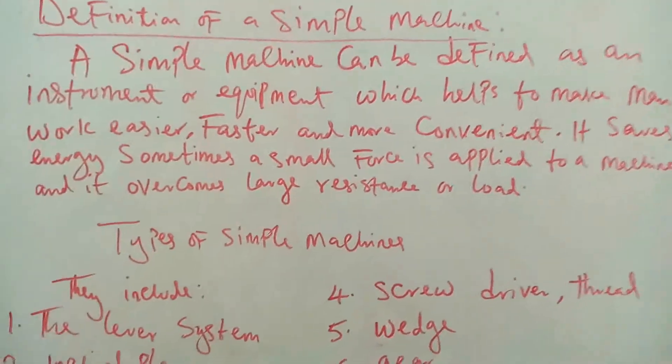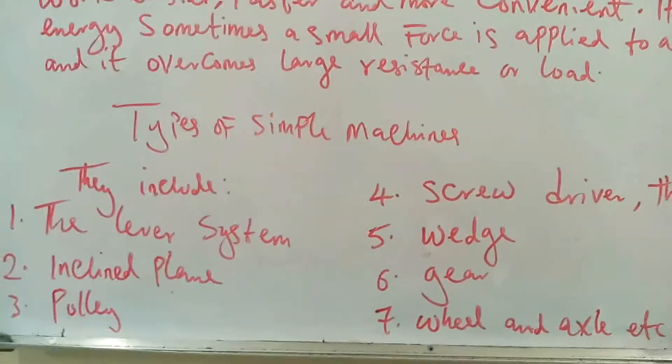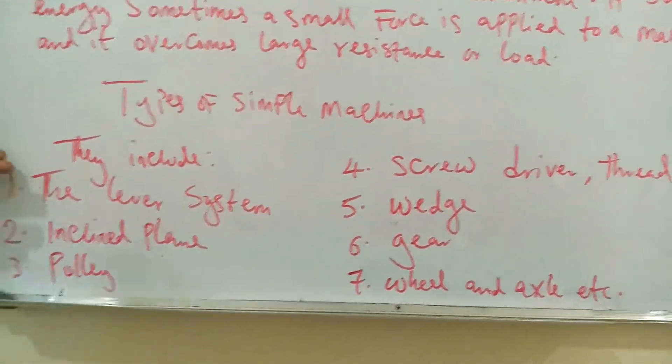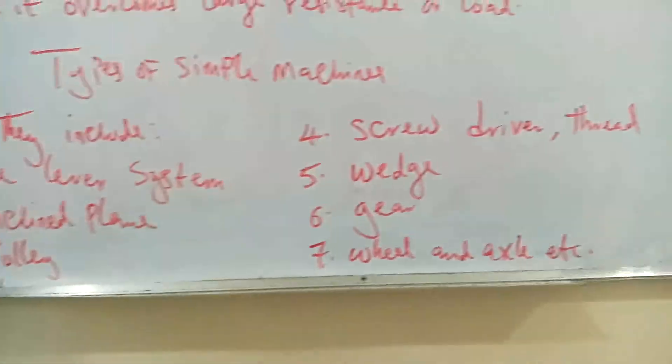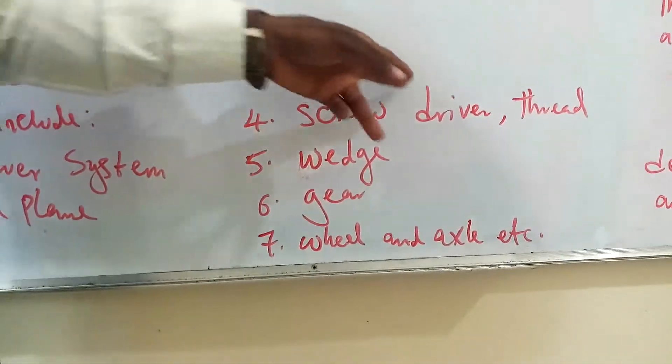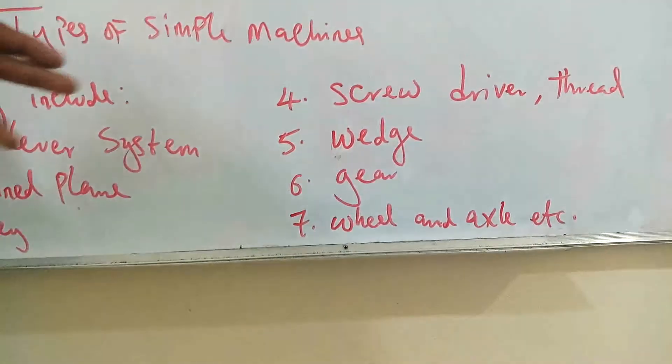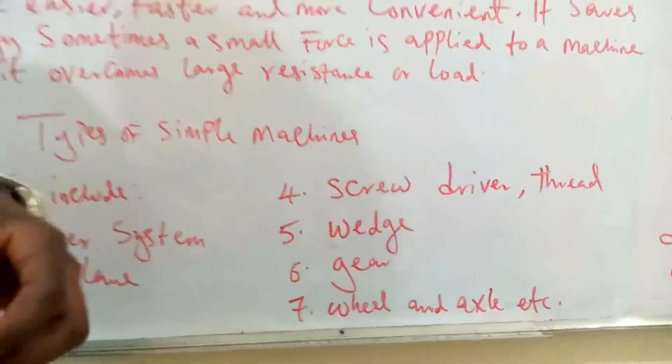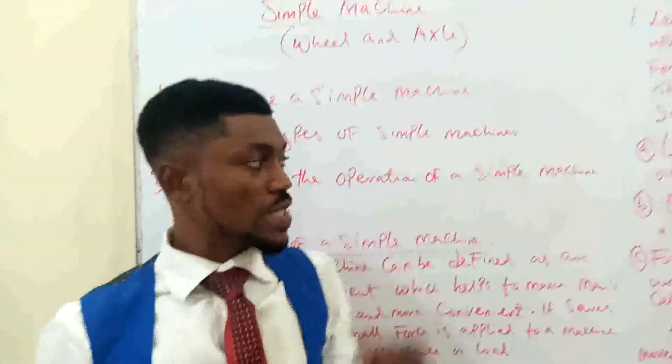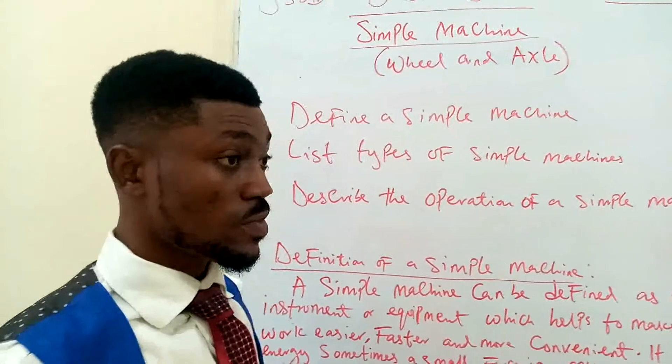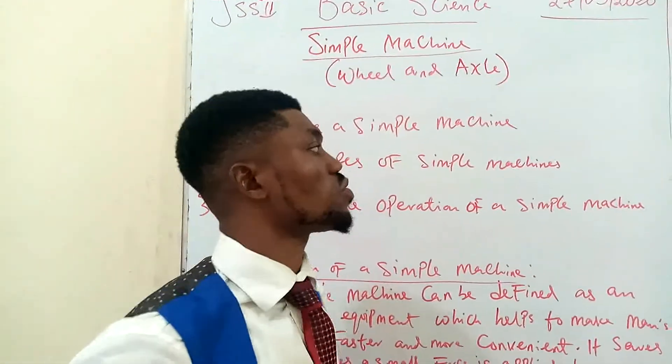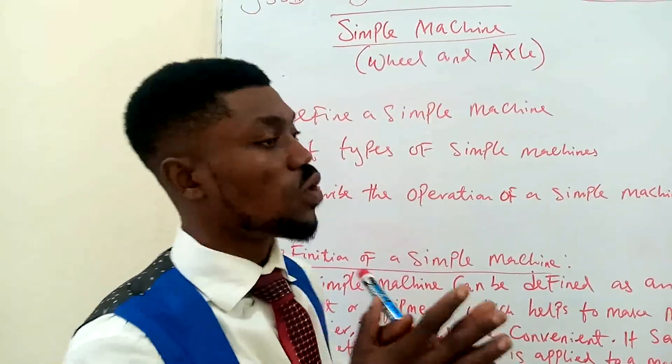We already stated the types of simple machines. We said we have the lever system. Let me throw more light on this screwdriver and tread. Most times, or before now, people tend to use nail to join two objects together.